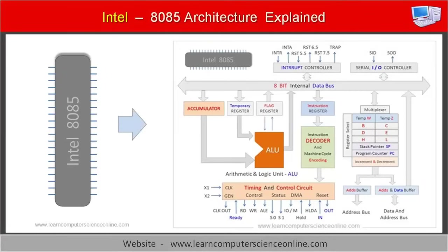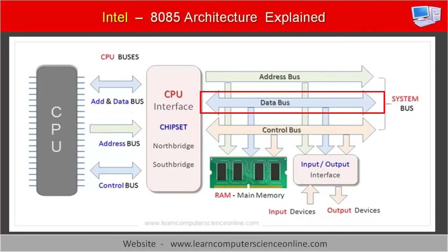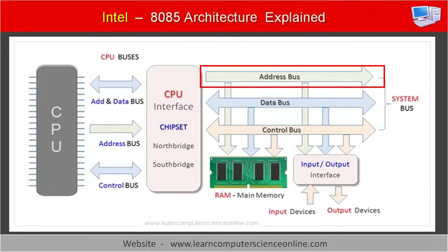Let us now discuss the final topic of this video: 8085 bus architecture and the bus interface. Computer buses are the group of wires running across the computer system through which data, address, and control signals are transferred. The microprocessor needs to communicate with various system hardware components in order to execute program instructions. The 8085 architecture has an 8-bit data bus and a 16-bit address bus.